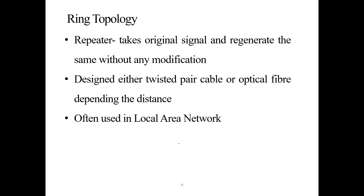Ring topology is designed using either twisted pair cable — that is shielded twisted pair cable — or optical fiber. The use of twisted pair cable or optical fiber depends on the area the ring topology is covering. If it is a large distance, optical fibers are used; if the distance is small, twisted pair cables are used. Ring topology is often used in local area networks where the area is comparatively small.